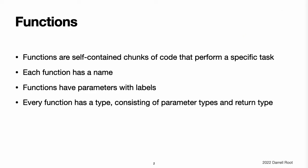Functions. Functions are self-contained chunks of code that perform a specific task. You give a function a name that identifies what it does, and this name is used to call the function to perform its task when needed. Swift's unified function syntax is flexible enough to express anything from a simple C-style function with no parameter names to a complex Objective-C-style method with names and argument labels for each parameter.